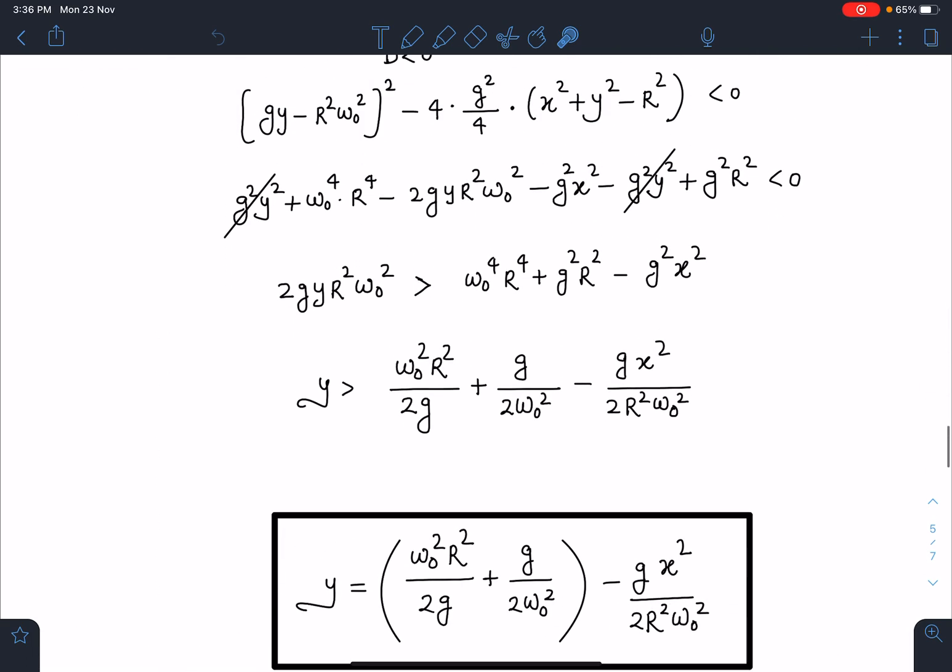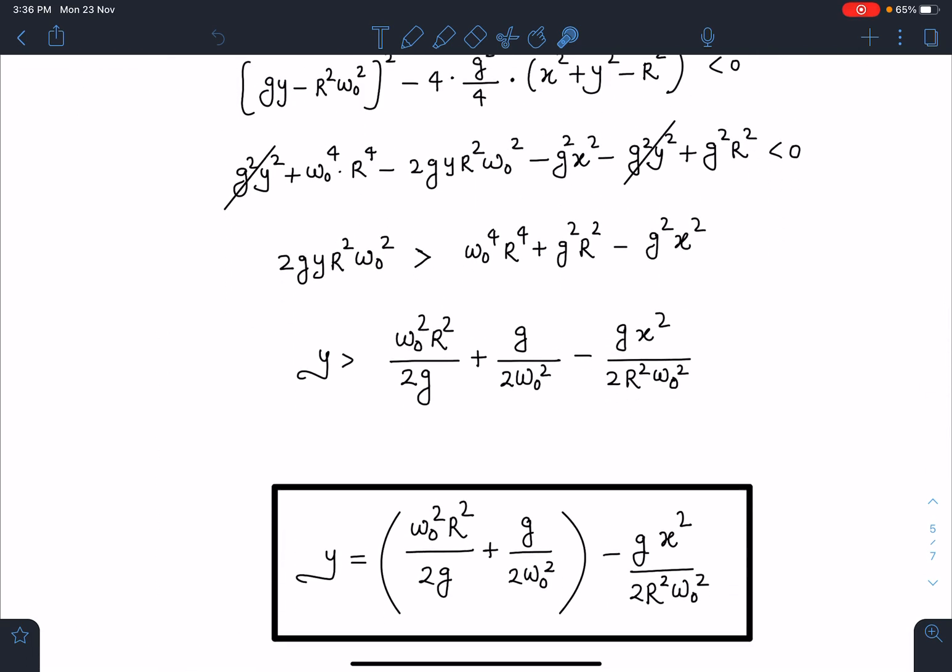So you are going to get that curve where this constant term is going to be (ω₀²R²)/(2g) + g/(2ω₀²) - (gx²)/(2R²ω₀²). This is going to be the envelope.